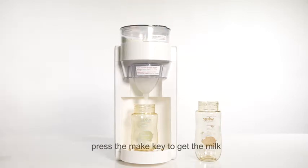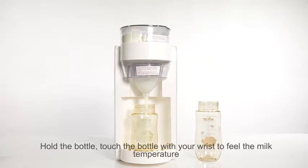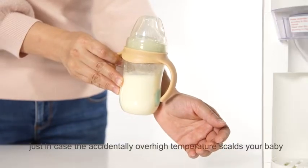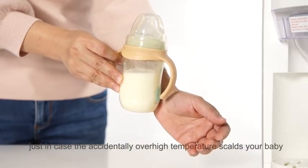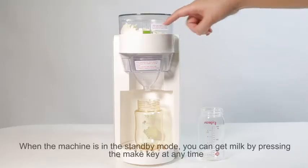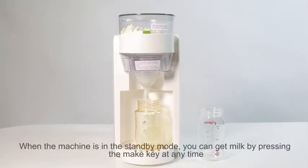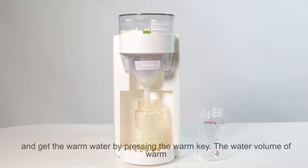Press the make key to get the milk. Hold the bottle. Touch the bottle with your wrist to feel the milk temperature, just in case the accidentally over high temperature scalds your baby. When the machine is in the standby mode, you can get milk by pressing the make key at any time and get the warm water by pressing the warm key.